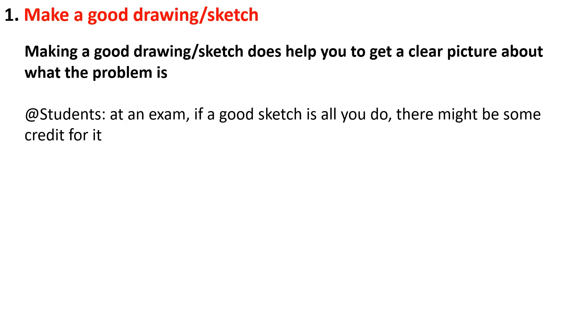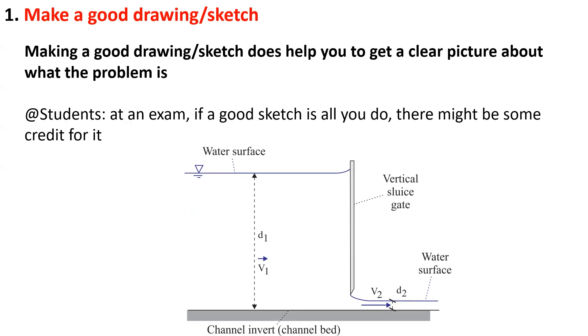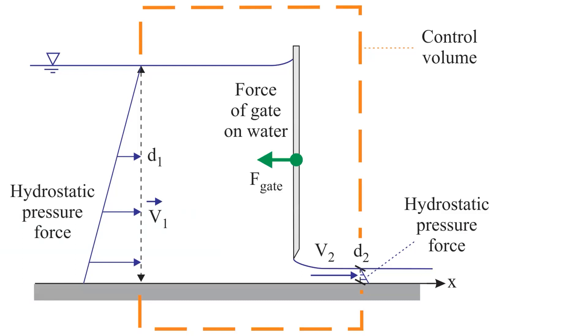So let us start with our sketch with the channel invert or channel bed, the vertical sluice gate partially opened, and the water surface upstream and downstream of the gate. We can further detail our sketch by introducing the control volume and looking at the horizontal forces acting on the control volume: the upstream hydrostatic pressure force, the downstream hydrostatic pressure force, and the force of the gate on the water. Note here that we show only the forces acting in the horizontal x direction, but all our quantities must be given with a symbol.